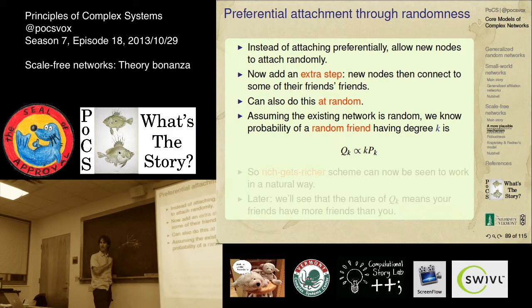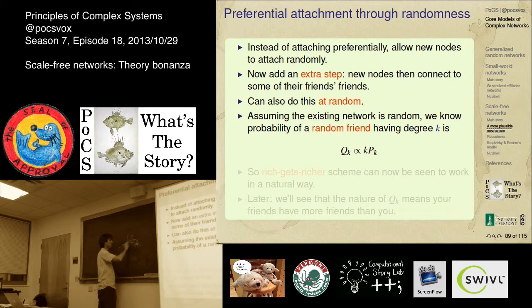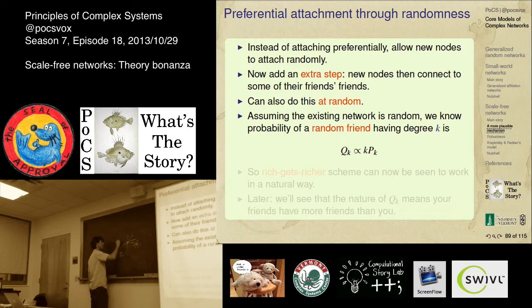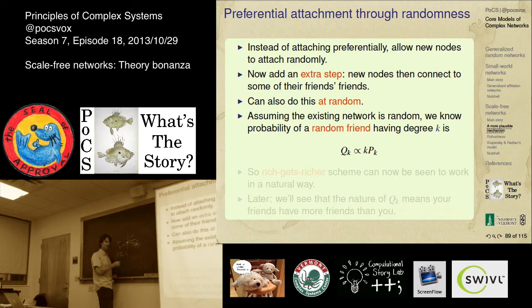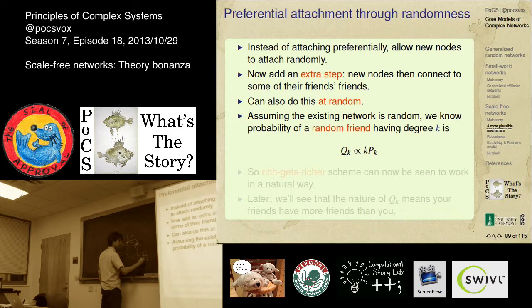This character has degree distribution p(k). Sample k from p(k) for the new node. For the friends of that node, their degree is sampled from a different distribution — q(k) = k·p(k) normalized by the sum of j·p(j), which is the average degree. You're multiplying by k because there are k ways to get to that node — there are more ways to get there. Think about this connection: your friend's friends are augmented in their ability to be found because they have k ways of being reached.